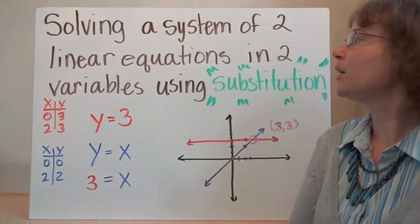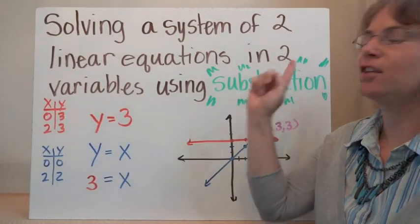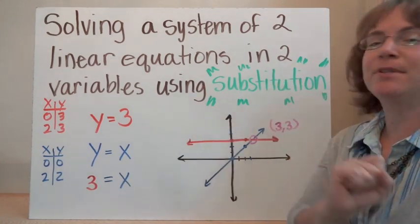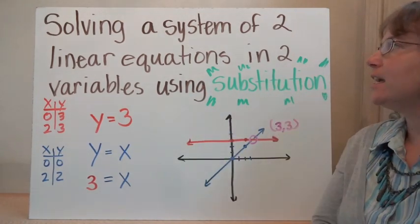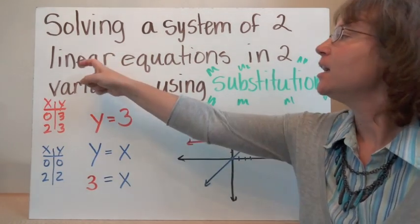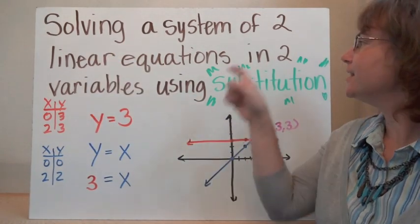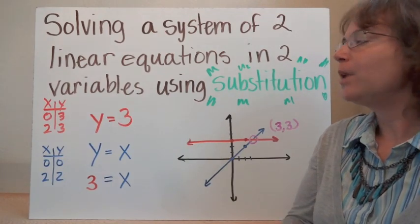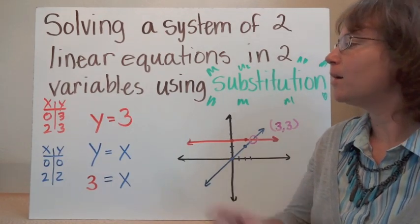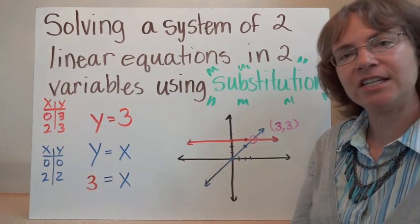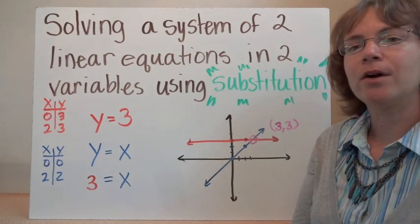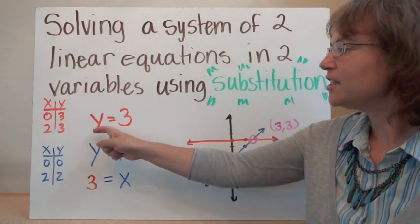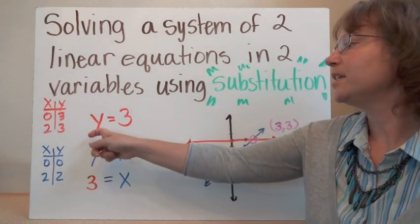Solving a system of two linear equations in two variables — in this case x and y — using substitution. So another way to solve a system of equations that consist of lines with two variables. We can use the fact that we want both the y's and the x's to equal each other in our coordinate system when we have two different lines. So let's look at the simplest case here.